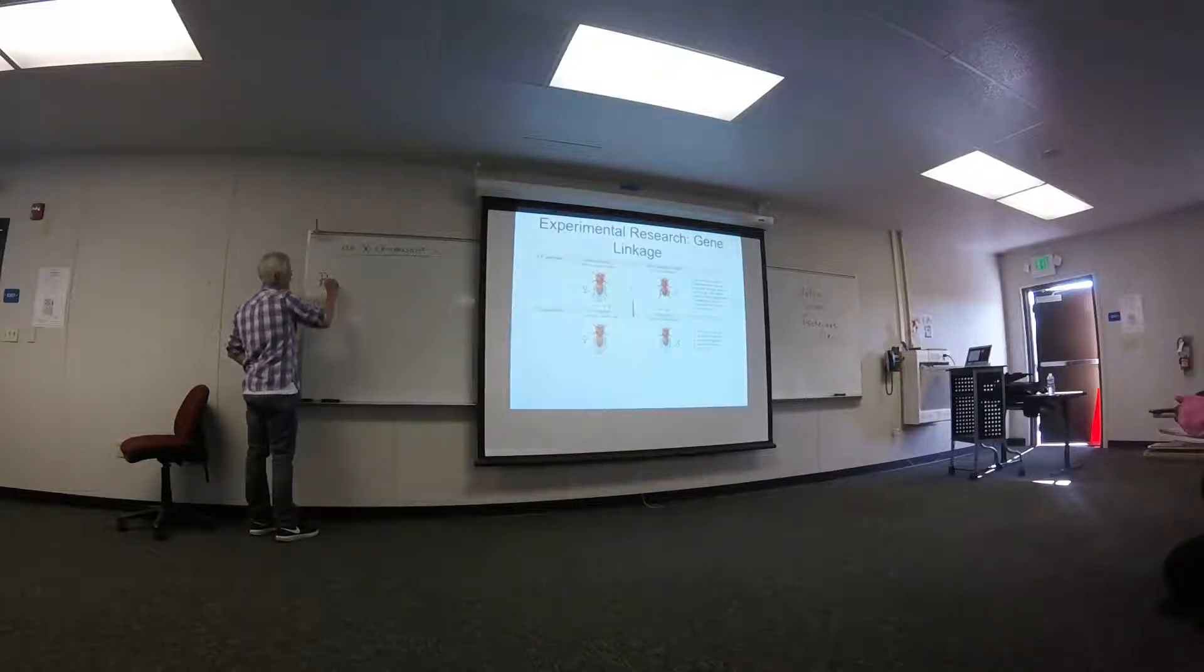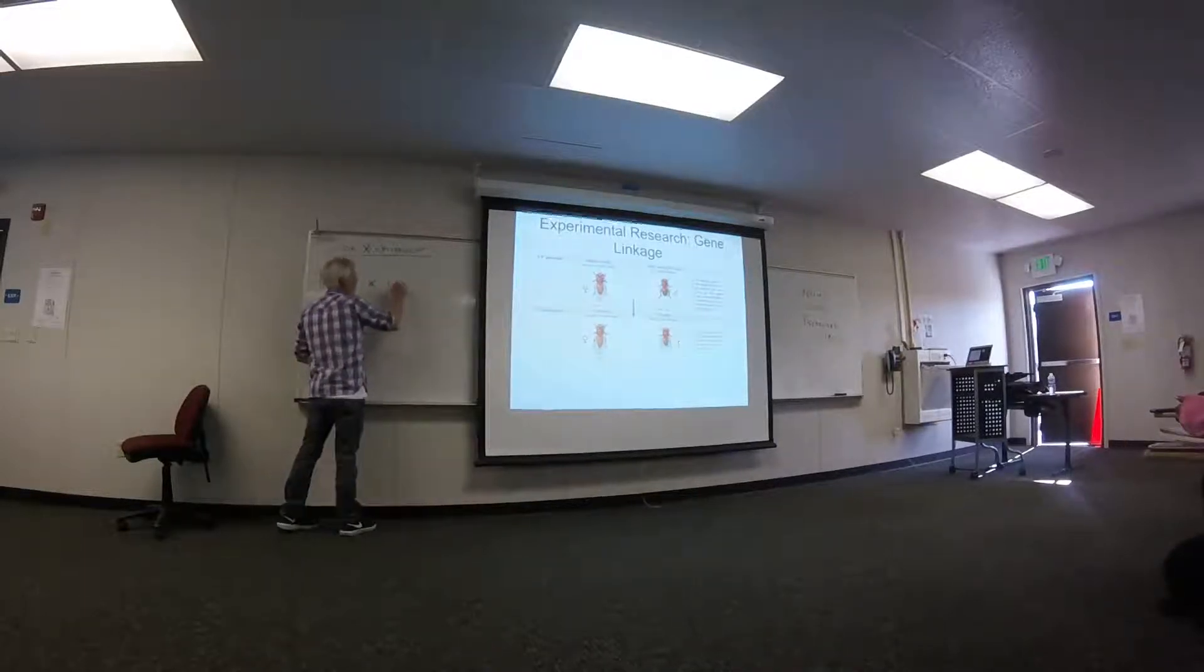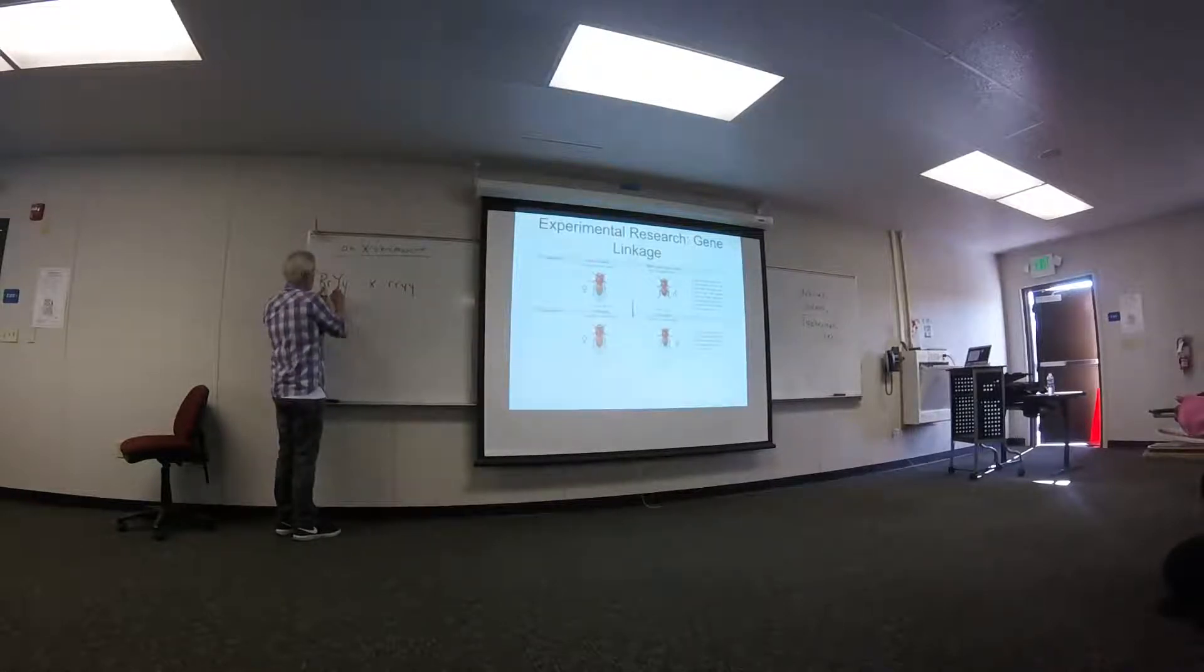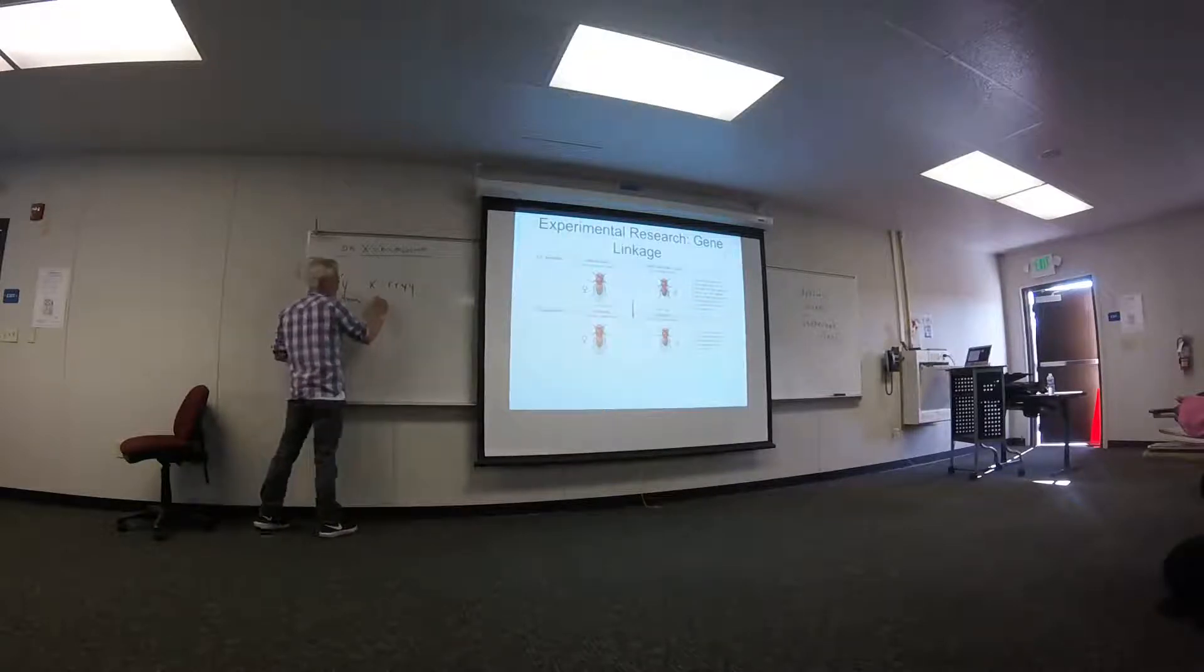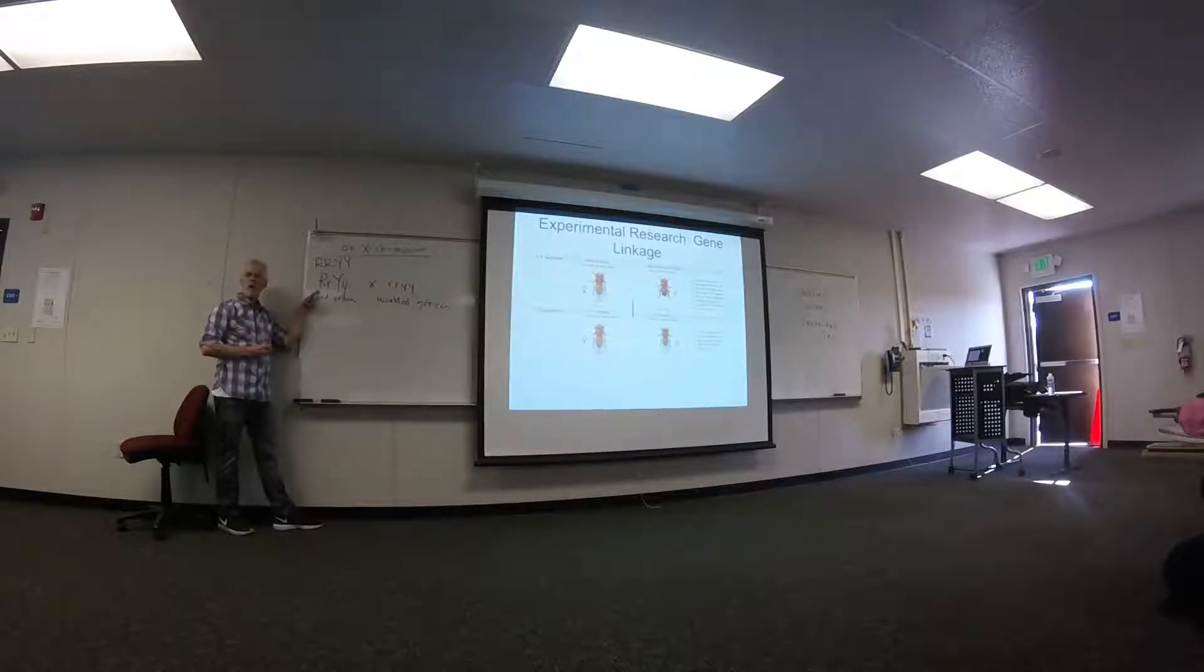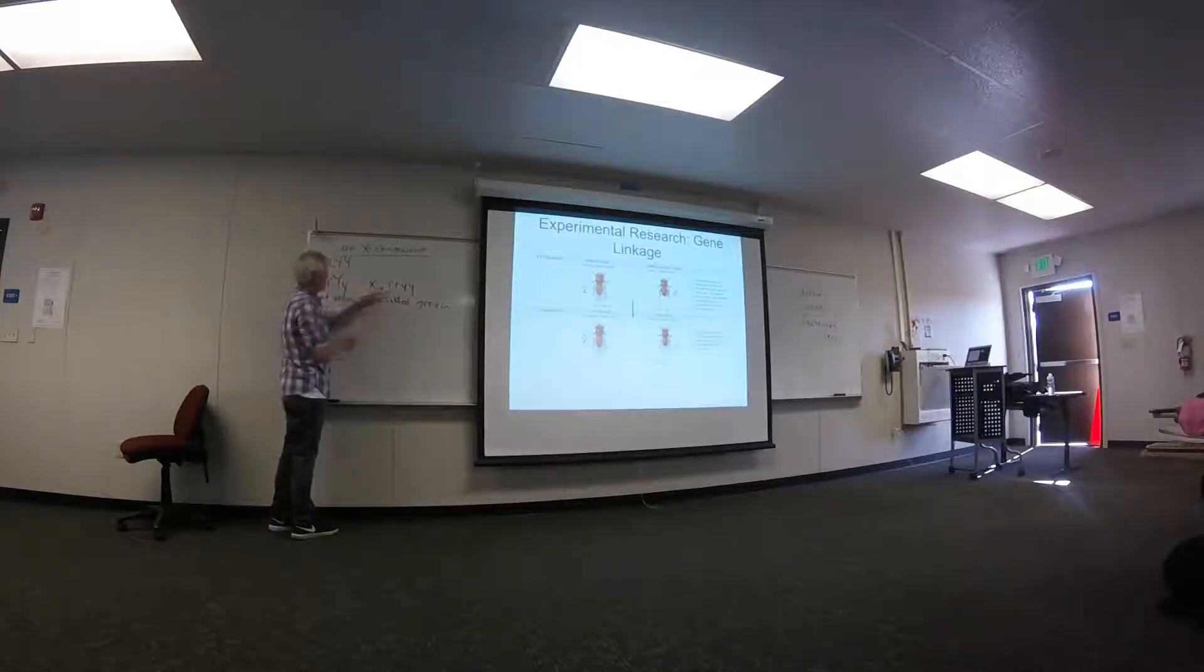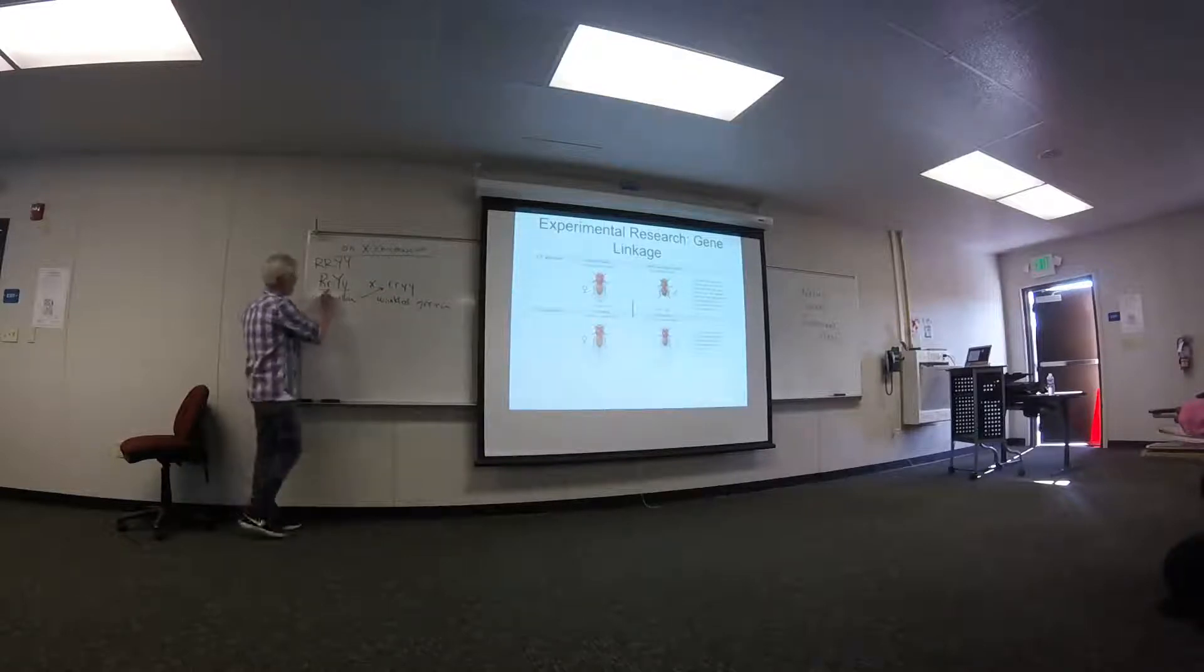If we take a heterozygous dihybrid individual pea plant and backcross it with the homozygous recessive, so round yellow seeds backcross with wrinkled green seeds. These look just like the true breeding parent. You can't tell them apart. If you backcross them to the recessive parent, you can identify the genotype.